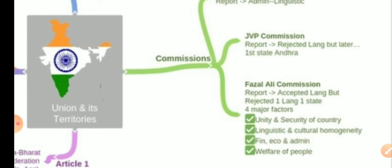In 1953, the government of India was forced to form its first linguistic state — Andhra State was formed by separating the Telugu-speaking area from Madras State. This was due to prolonged popular agitation and the death of Potti Sriramulu, a Congress person who died after a 56-day hunger strike demanding a linguistic-basis state. His death forced the government to form the first language-based state, that is Andhra State.